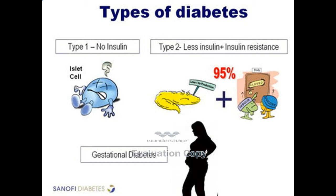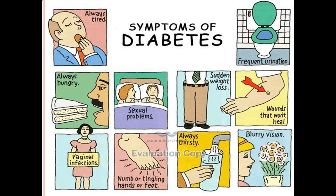Whereas if you look at type 2 diabetes, it begins with the process of insulin resistance, which means that for any reason the insulin is not able to work on that door. It is usually present in people who are fat or obese and who have a big tummy, such that there is a lot of fat and insulin cannot work on the body cells. This phenomenon is called insulin resistance, and because of that, initially the pancreas produces increasing amounts of insulin but eventually gets fatigued and starts producing less insulin. So the combination of less insulin and insulin resistance is what is termed type 2 diabetes.